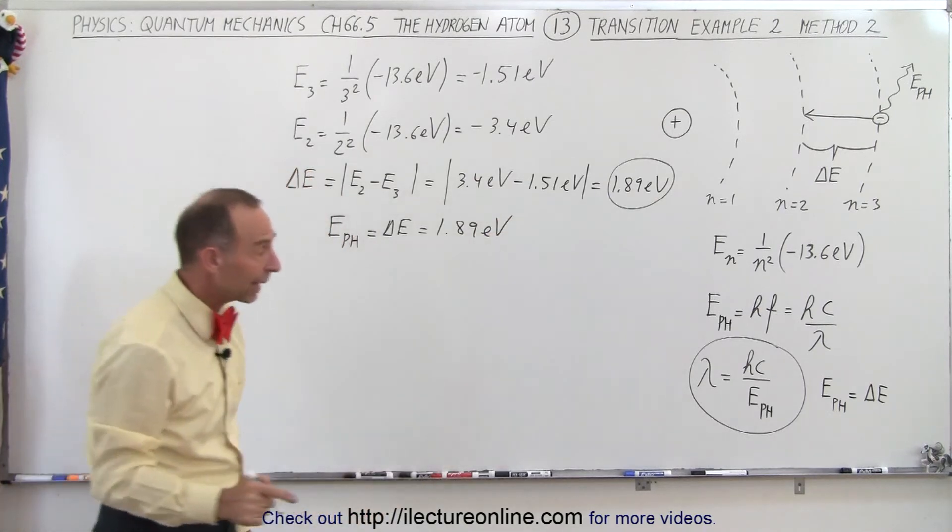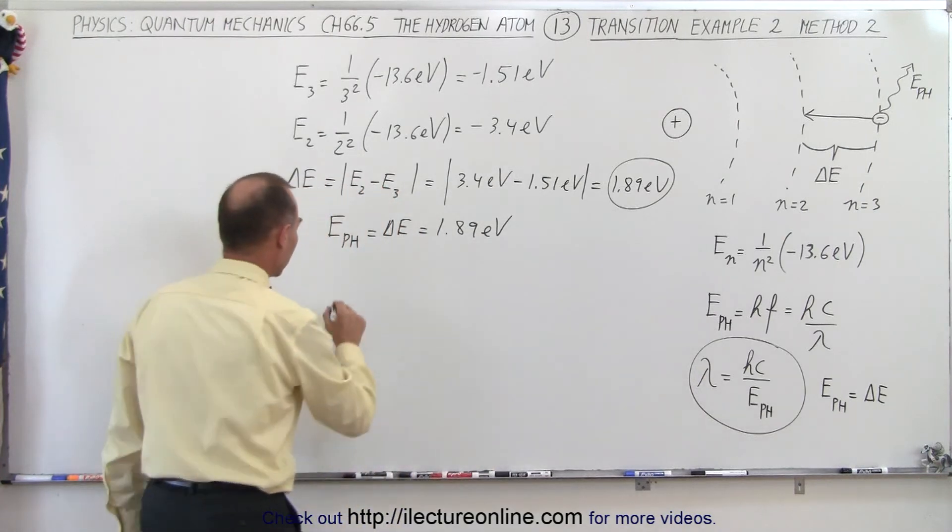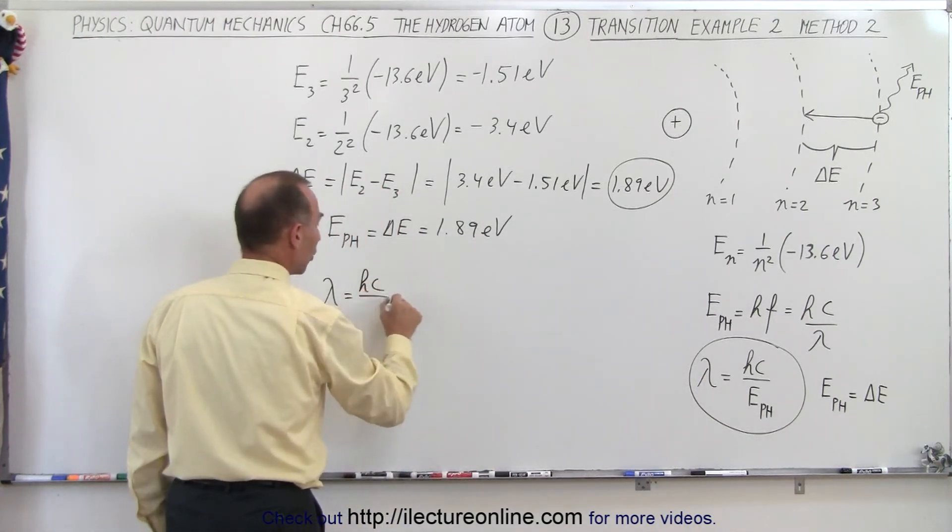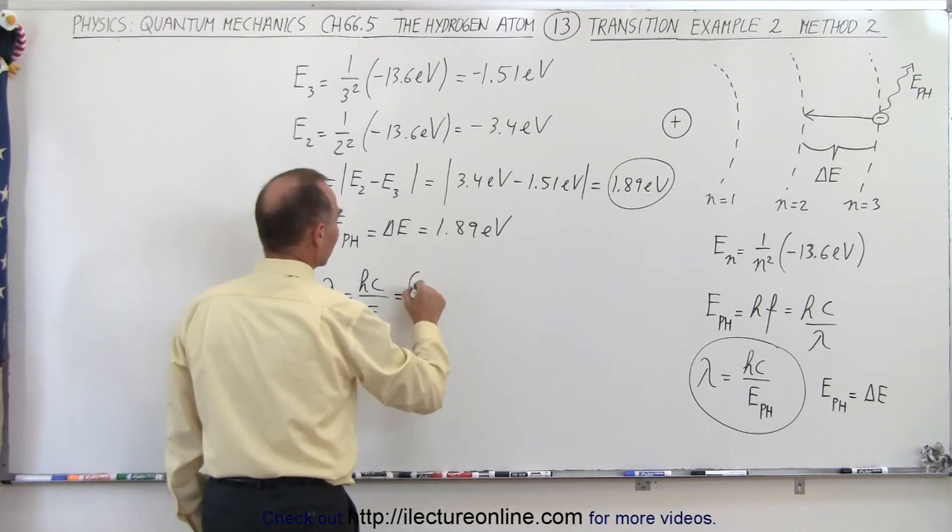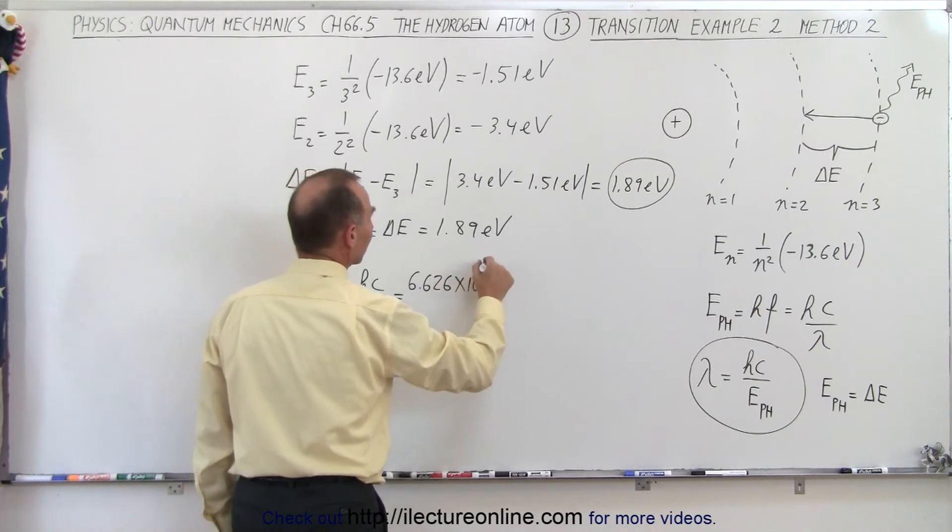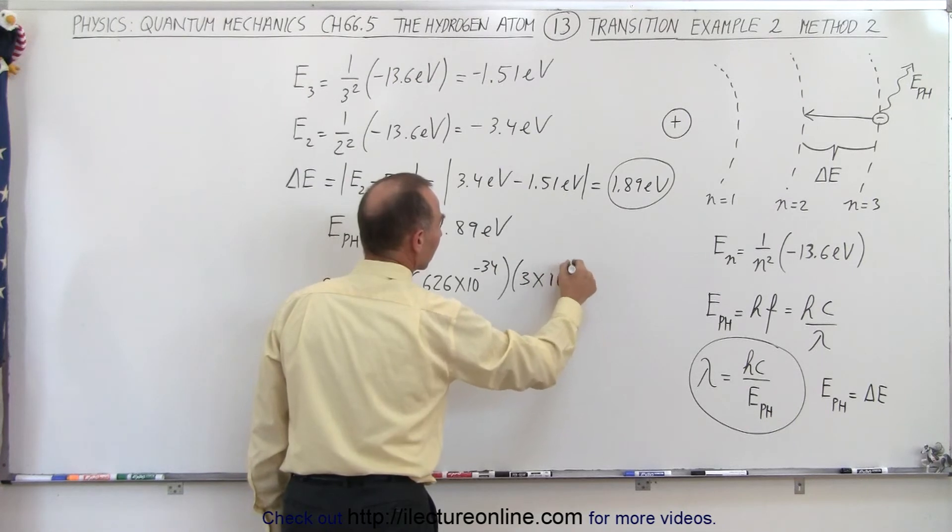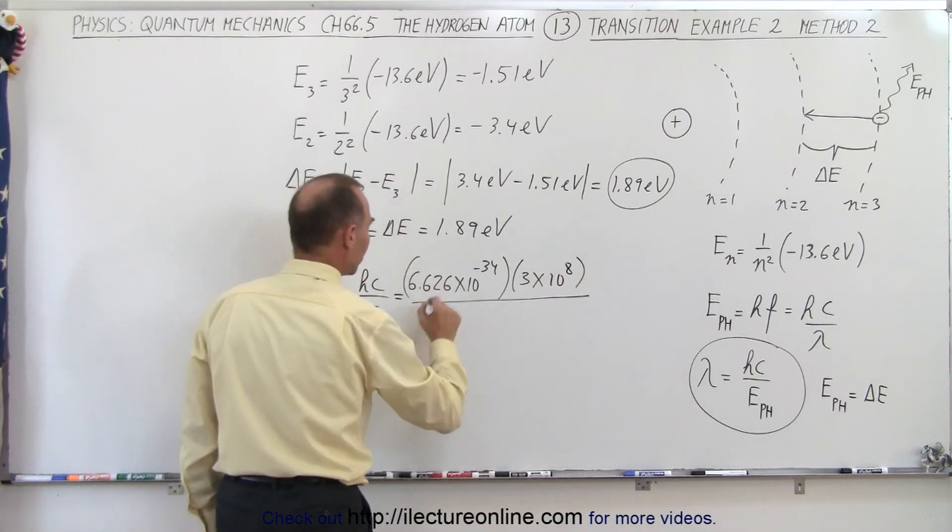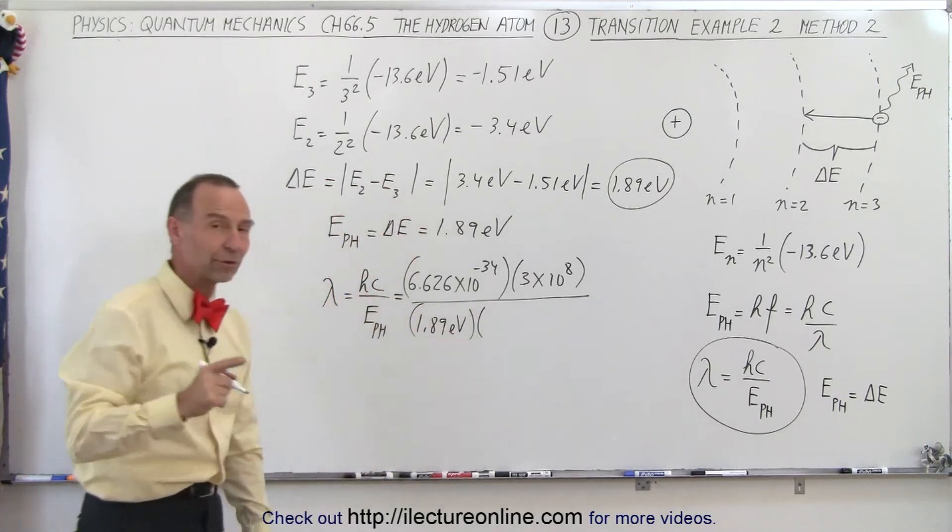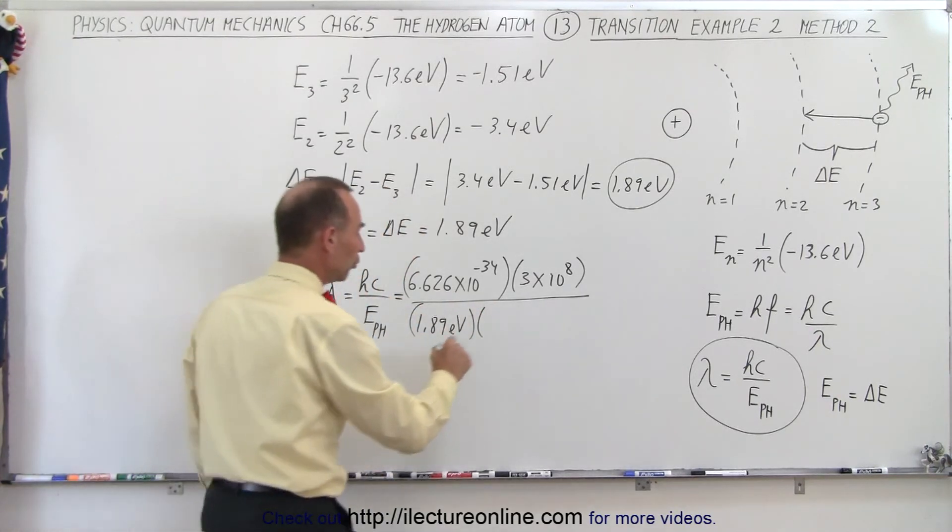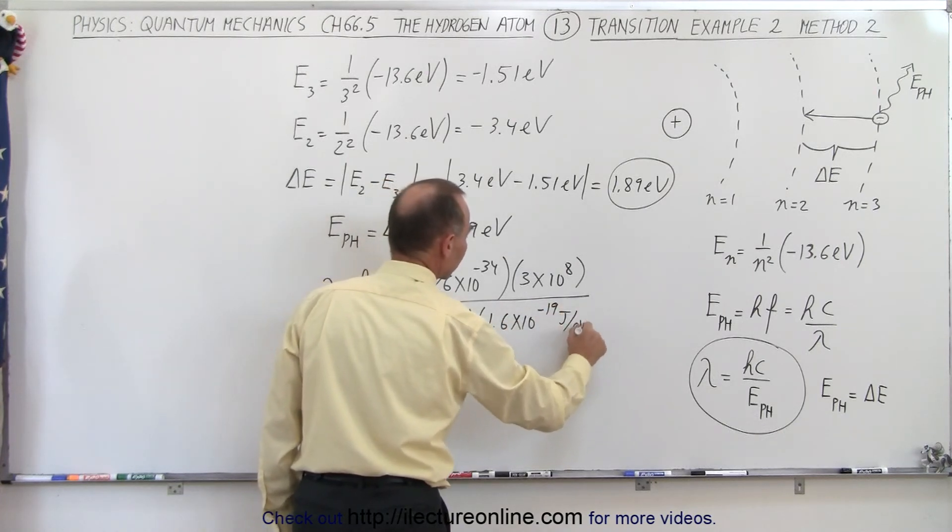Now let's plug that into our equation to find the wavelength of the photon. So lambda is equal to hc over E of the photon, which in this case is 6.626 times 10 to the minus 34, times 3 times 10 to the 8, and that would be 1.89 electron volts multiplied by the conversion from electron volts to joules, 1.6 times 10 to the minus 19 joules per electron volt.